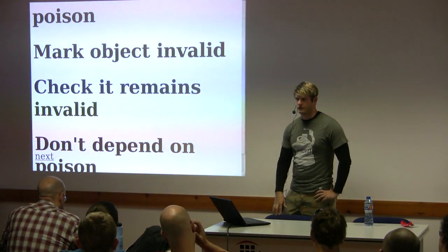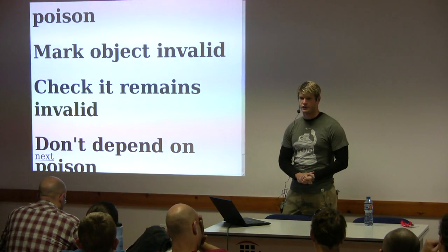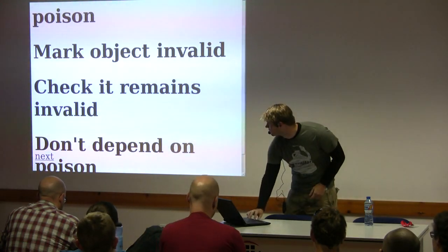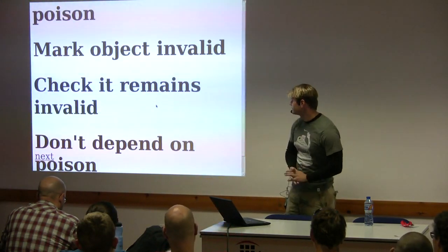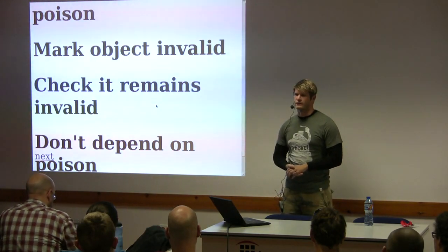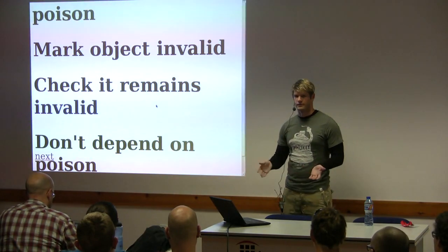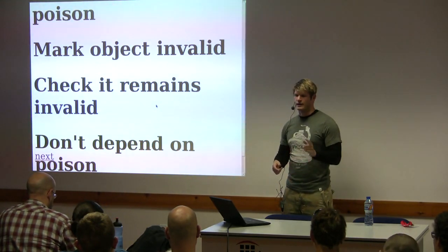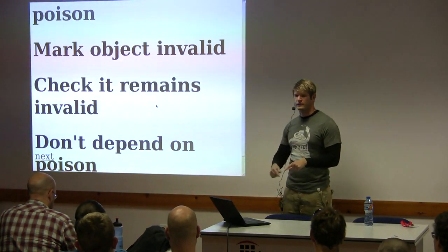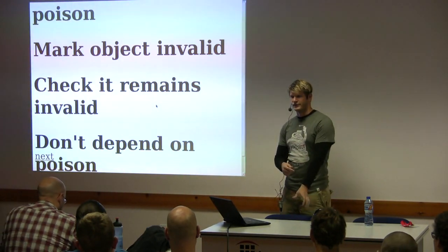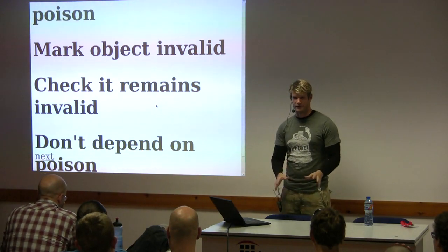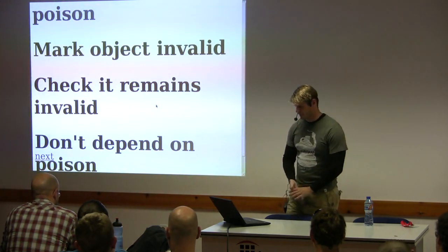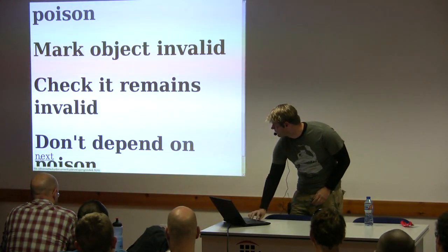One last thing the kernel does, which unfortunately userland doesn't do at present, is check the poison value. You want to check that it remains invalid. This can detect write-after-free, where you fill an object with 0xDEADBEEF. The pool code is actually pretty good about this — you can set an option in pool where on every allocation and every free, it walks its entire free list to make sure all previously-freed objects are still in their pristine poisoned state, and nobody has meddled with them. If anybody changes an object after you freed it, that's a good time to panic.